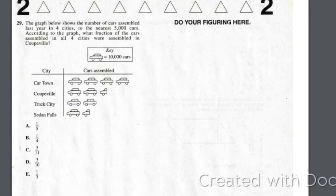All right, number 29. The graph below shows the number of cars assembled last year in four cities to the nearest 5,000 cars. According to the graph, what fraction of the cars assembled in all four cities were assembled in Coopville?